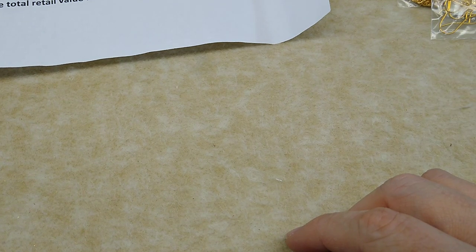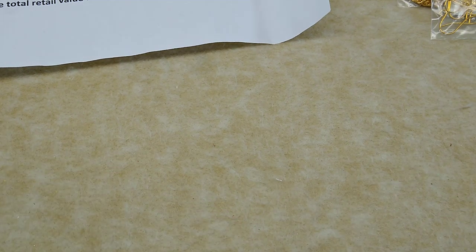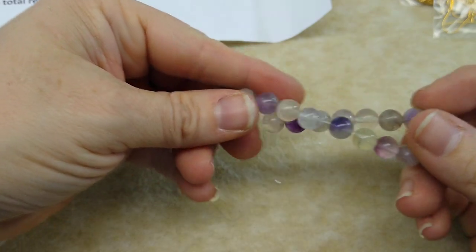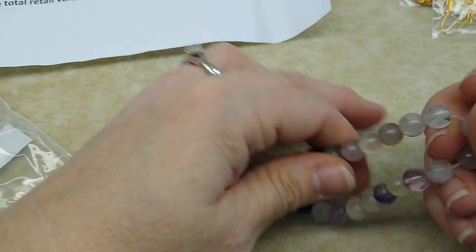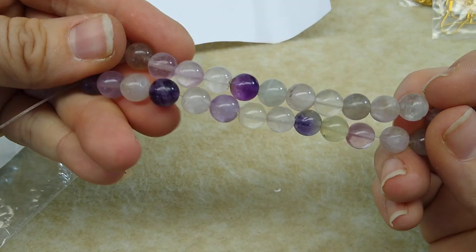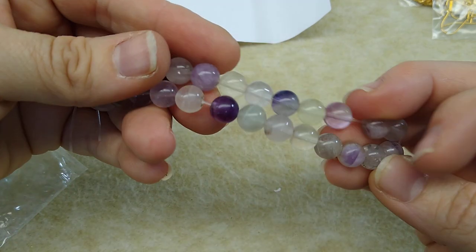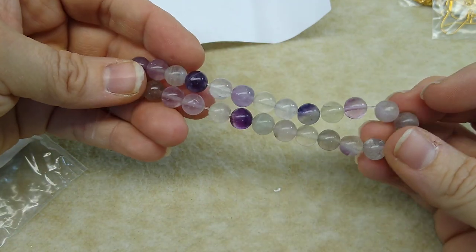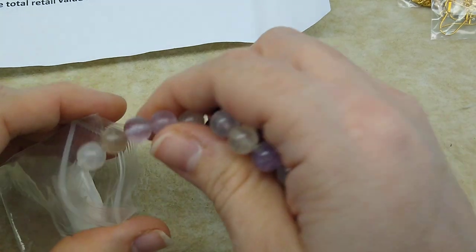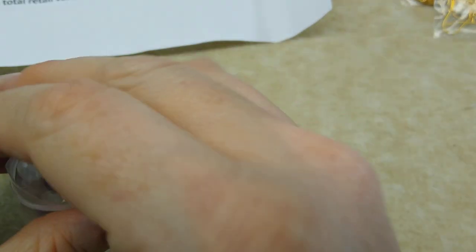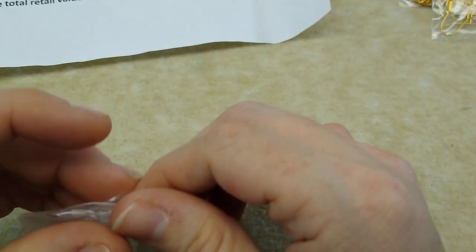Number 12. Ooh, this is pretty. This is what I thought it was. Fluorite. Seven and a half inch strand of eight millimeter natural rainbow fluorite round beads. Look how pretty this is. Fluorite. I love this. Beautiful. Wow. Beautiful, beautiful.